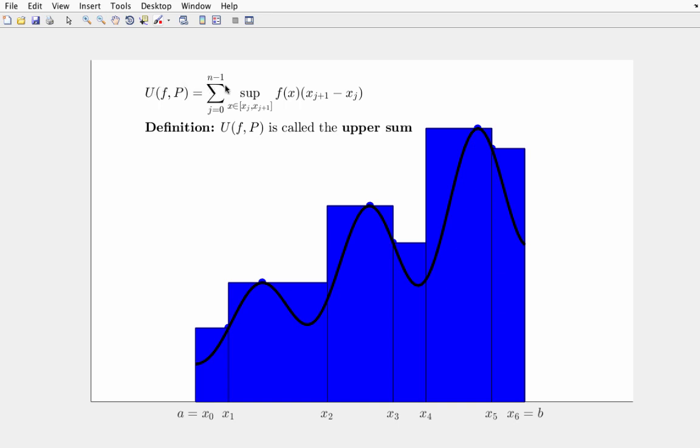So, just to reiterate, this formula is a sum of rectangular areas. The supremum of f on the subinterval is the height of the rectangle. And this xj plus 1 minus xj is the width. Here we see x3 minus x2 is the width of this particular rectangle. And we're adding up all of the rectangles.